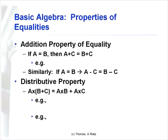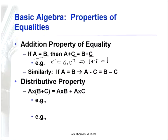Here are three more simple algebra rules we will use. One is called the addition property of equality: if you have a relationship between two things, you can add a constant to both sides. For example, if we know the return on investment equals 7%, then we know the gross return — which is 1 plus the return on investment — equals 1 plus 7%. You can also subtract things from both sides as well.